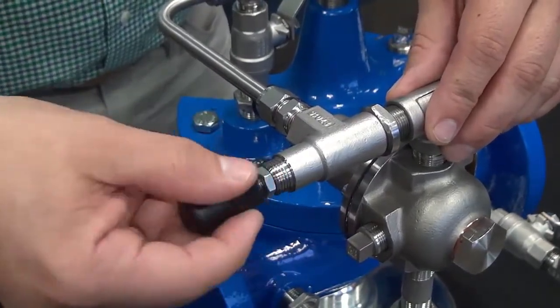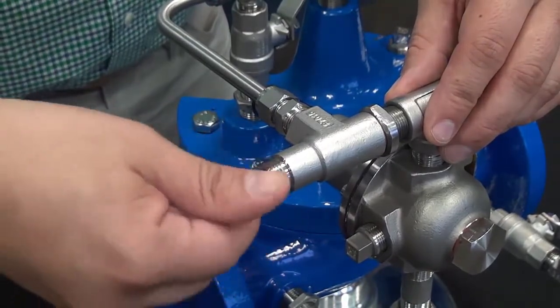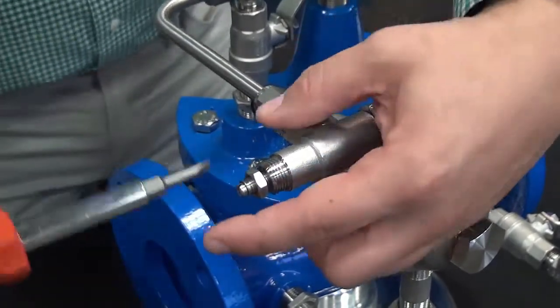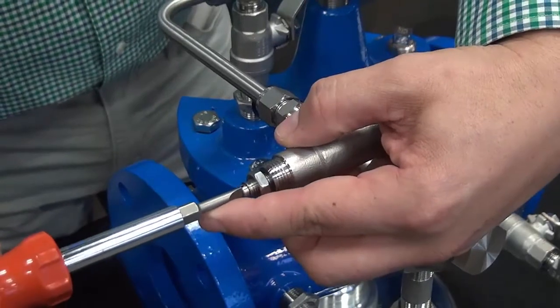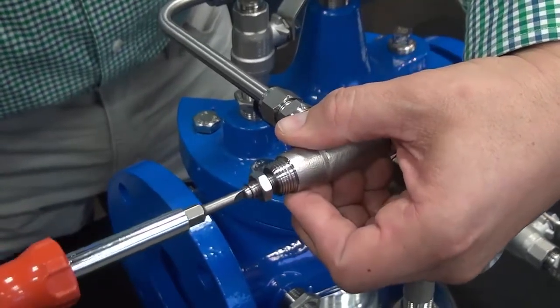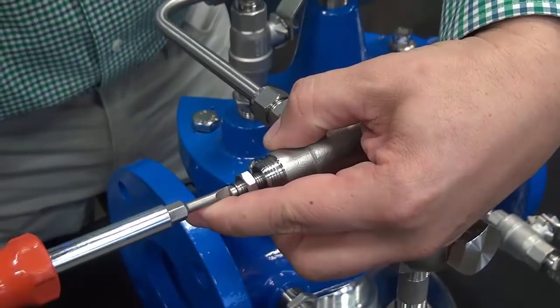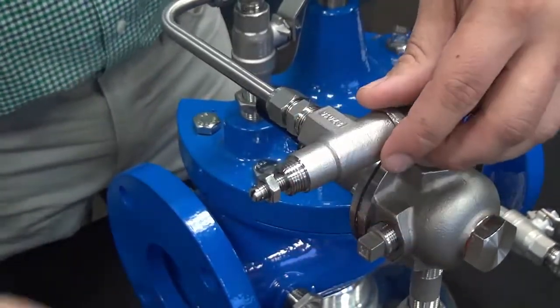So we'll remove the cover, we'll loosen the jam nut here, and we will back this out so that the speed control is out of the way.